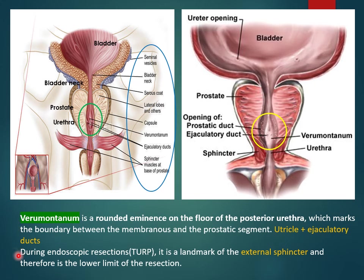During endoscopic resection of the prostate — TURP — the verumontanum is the landmark of the external sphincter and therefore is the lower limit of resection of the prostate in TURP.